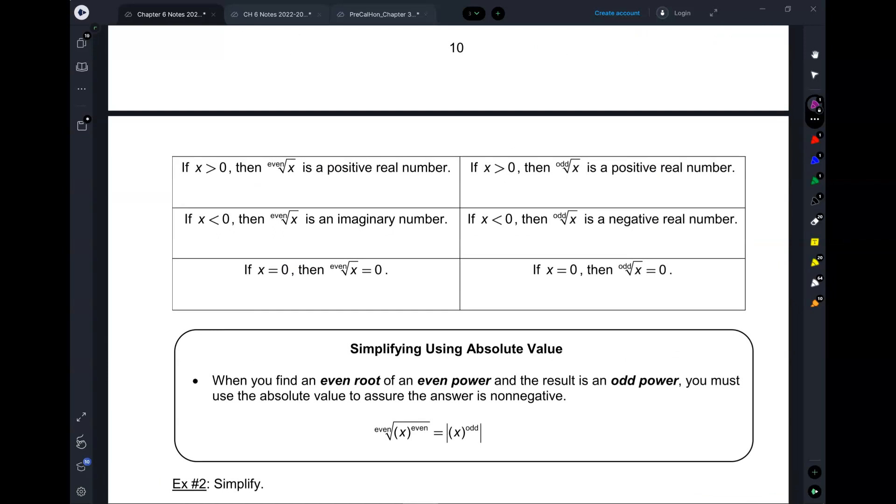So, this is very important, and students often forget this. Okay, so now we're looking at roots, and x is going to be the radicand. If x is positive, so let's take a look at if x is positive. Then, you can either have an even root or an odd root. So if you have an even root, then you just get a positive real number. So, for example, the square root of 16 is 4. And then, like, the cube root of 8 is 2. So, positive, positive, fine.